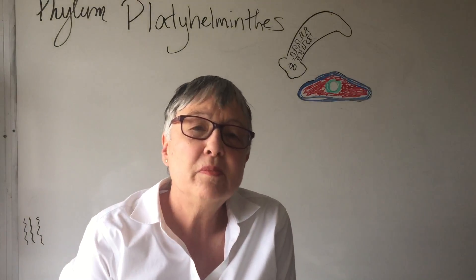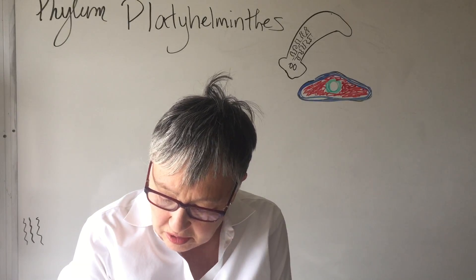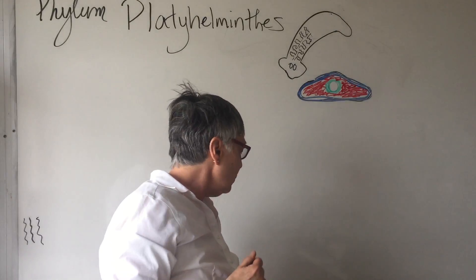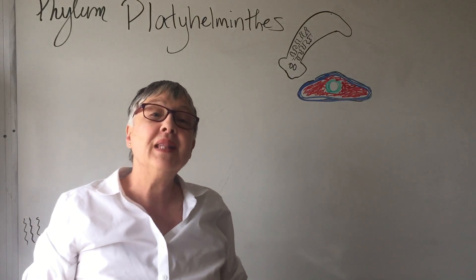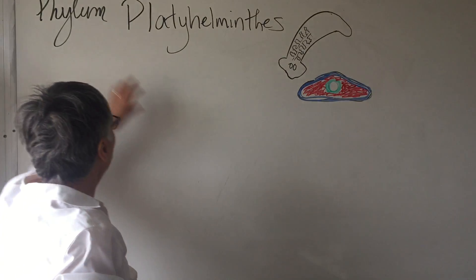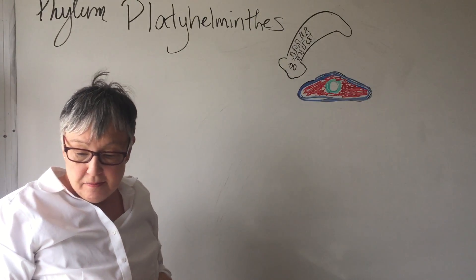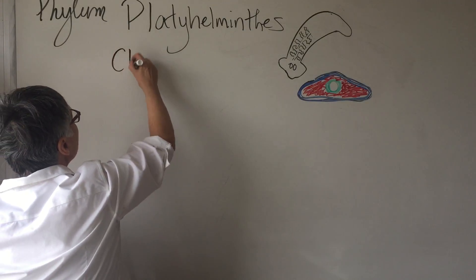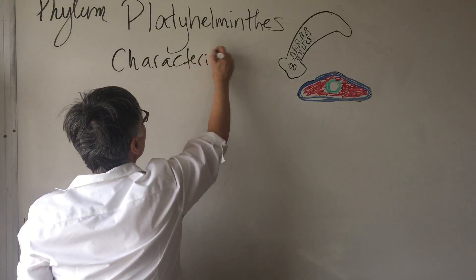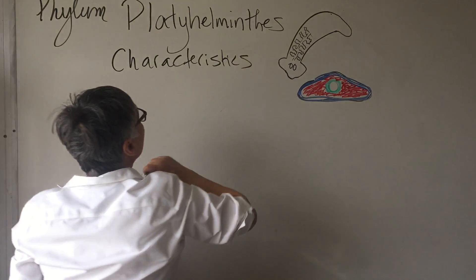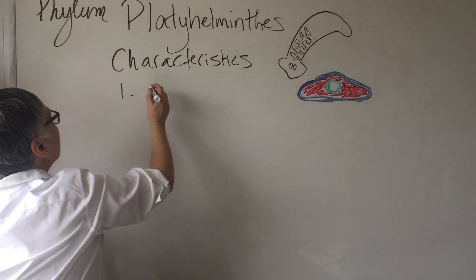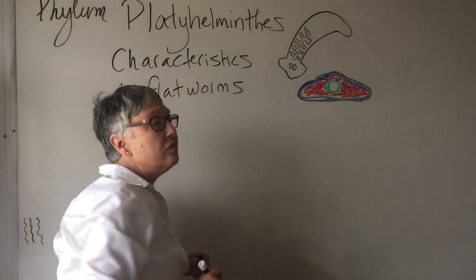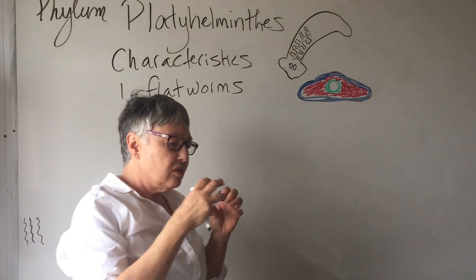This is Dr. Martin's supplemental lecture on Chapter 23. This is Section 4, which covers the group called the Platyhelminthes, or phylum Platyhelminthes. These are referred to as the flatworms, for obvious reasons.